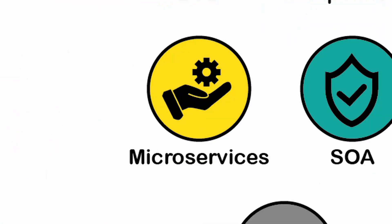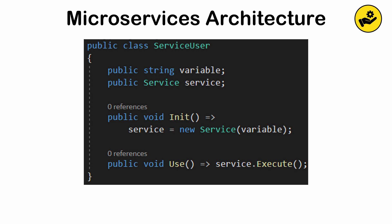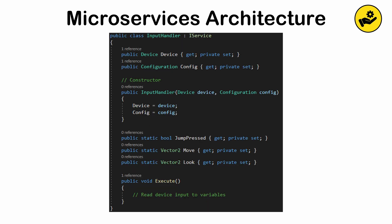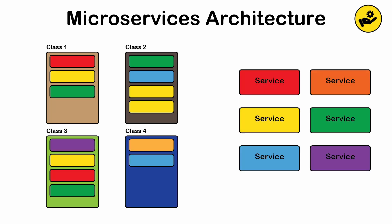Microservices architecture. A service is a unit of functionality, or a component that performs a specific task. Services are generally self-contained and responsible for doing exactly one thing, and are only called upon as needed. For instance, a service in charge of input handling, or a service that processes payments. The microservices pattern structures the project as a collection of small, independently deployable services.